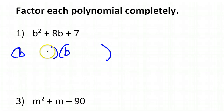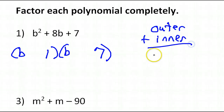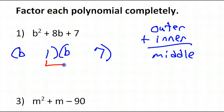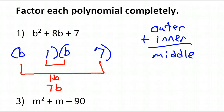Inner plus outer equals middle. This is the inner, this is the outer. Inner I have 1b, outer I have 7b. The middle I'm trying to get is 8b. Well, I can control the signs. If both signs are positive, that would make 8b. So that means these are positive, and positive 1 times positive 7 is 7.